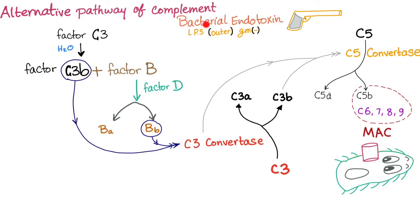What triggers the cascade is bacterial endotoxin, which is a lipopolysaccharide in the outer membrane of gram-negative bacteria.